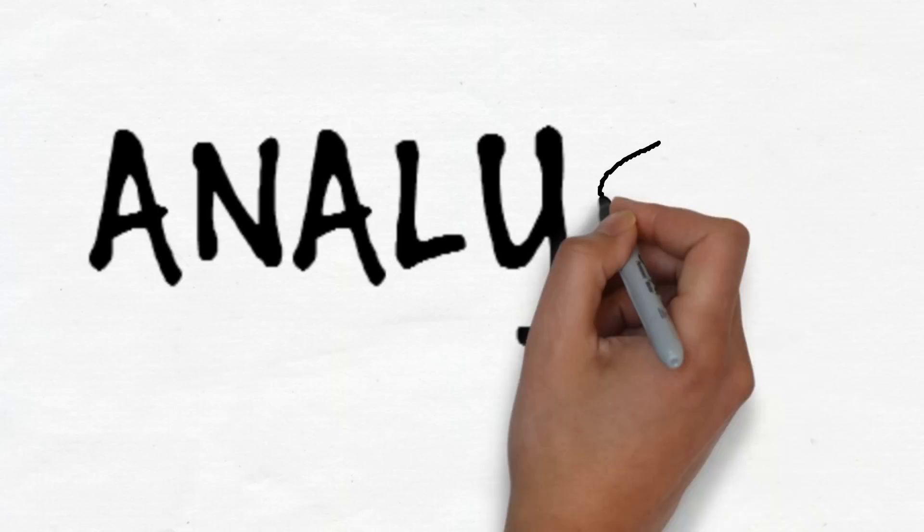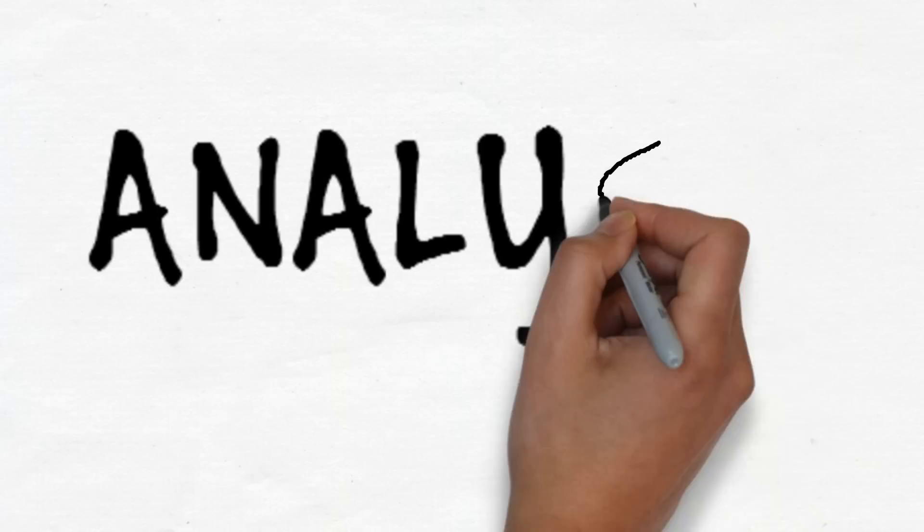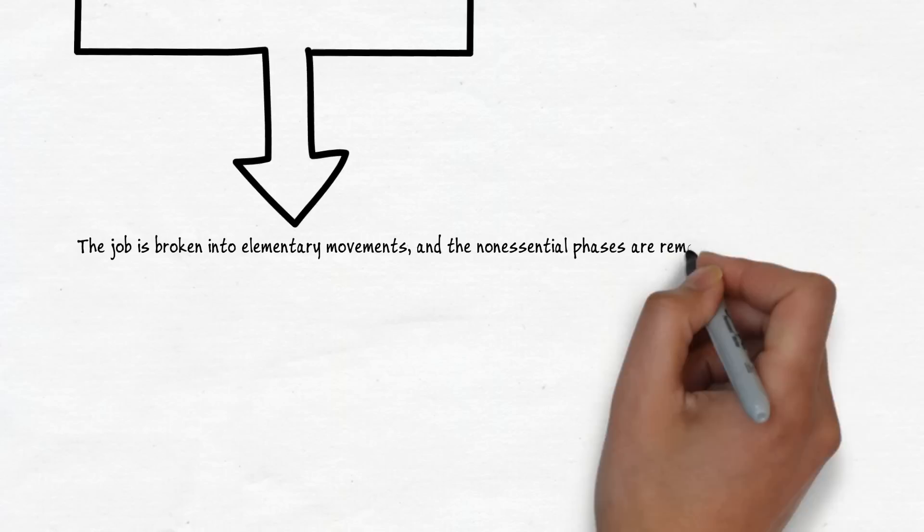Scientific management was then formed into two phases. Analysis, where the job is broken into elementary movements and the non-essential phases are removed. The remaining movements are then examined to determine the least wasteful way of performing the job.